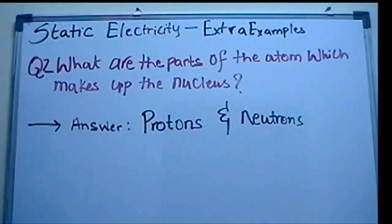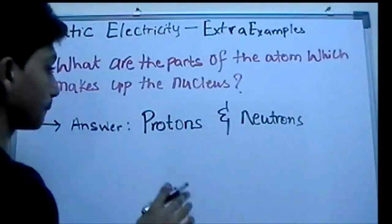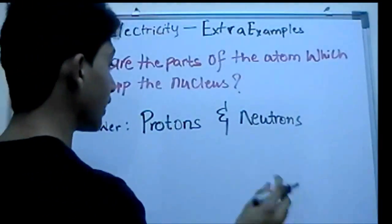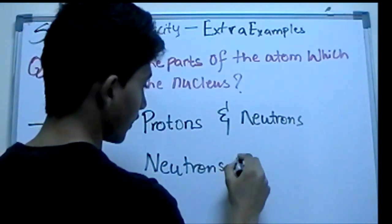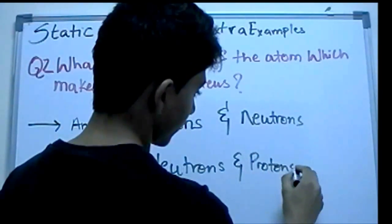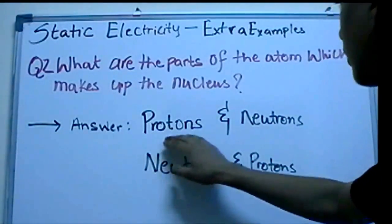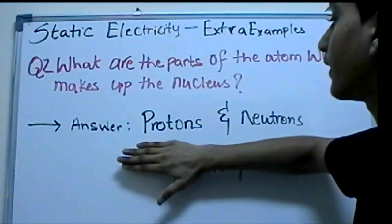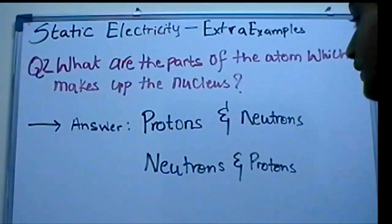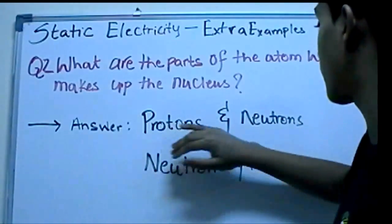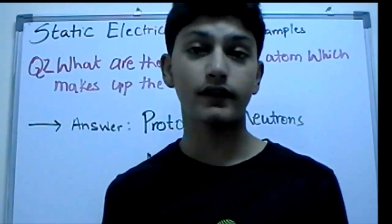There are two ways people may write this answer depending on their perspective. The first way is protons and neutrons. The second way is neutrons and protons. Either order is correct — it basically doesn't matter whether you put protons first or neutrons first, as long as both are included.